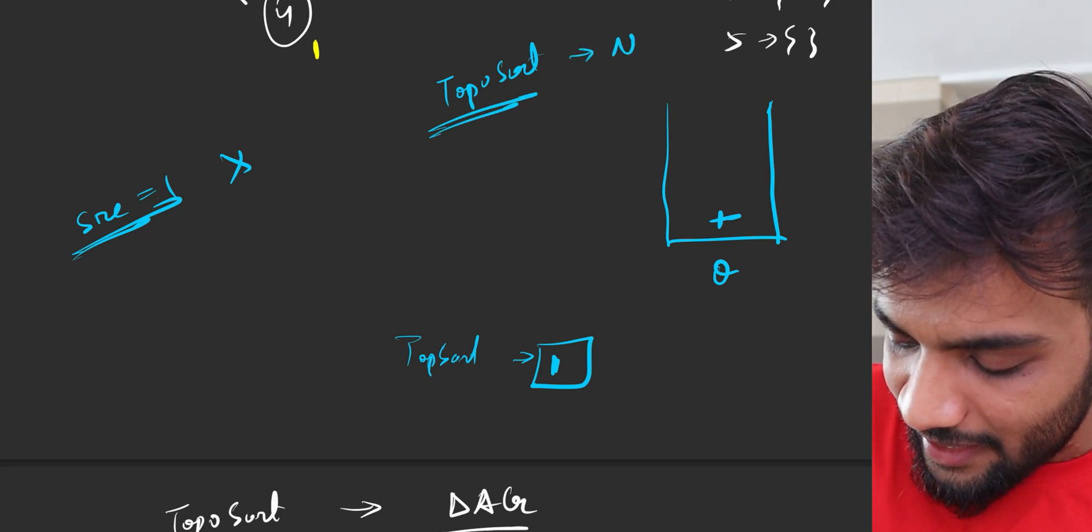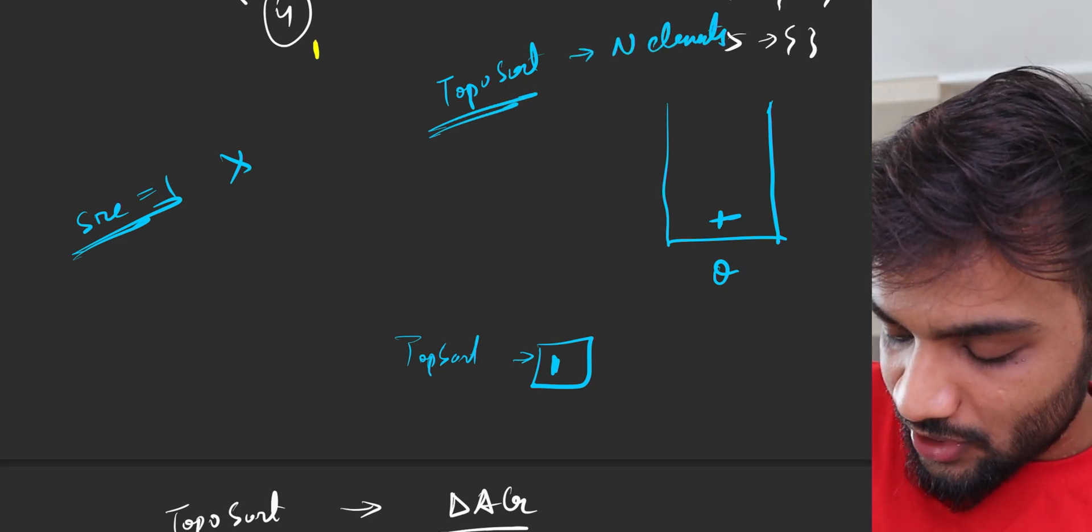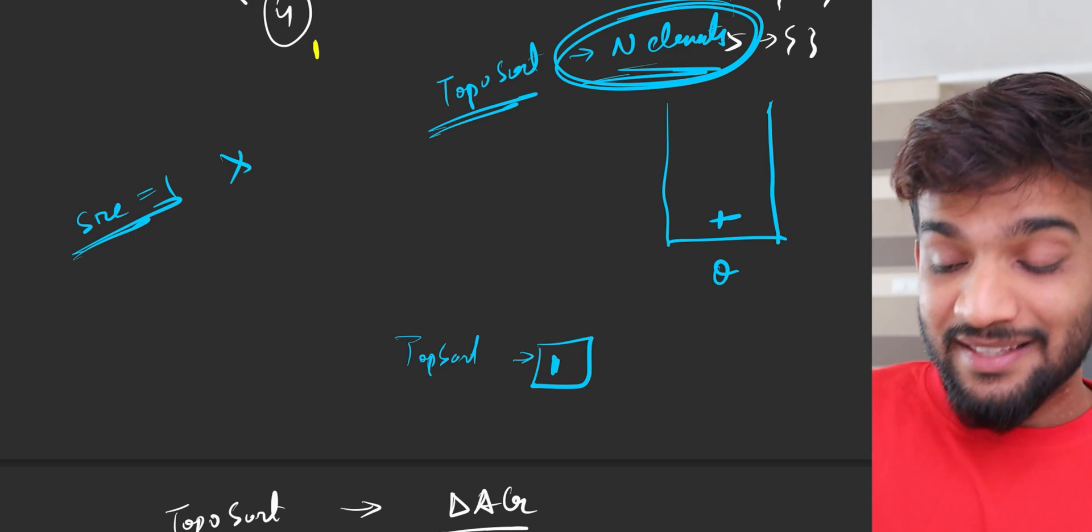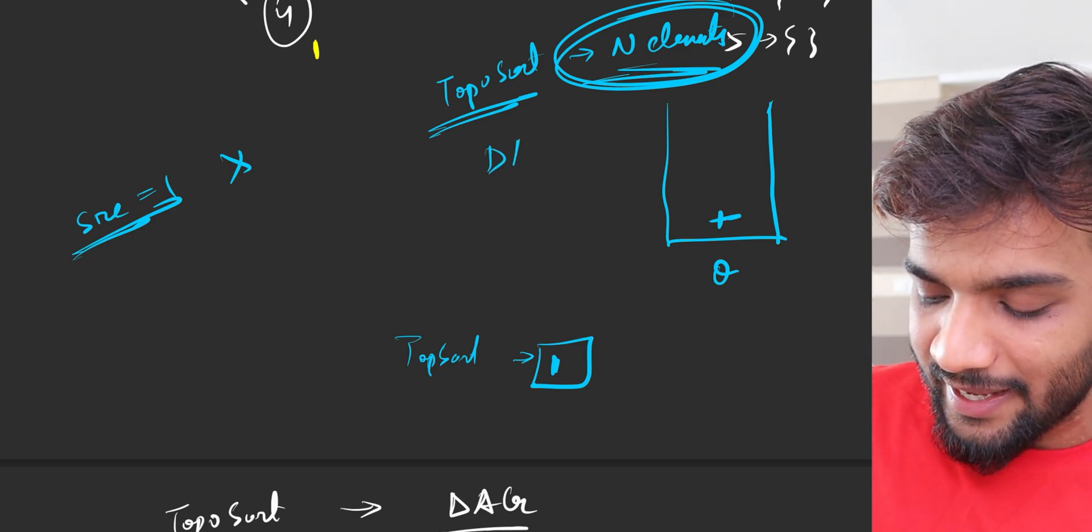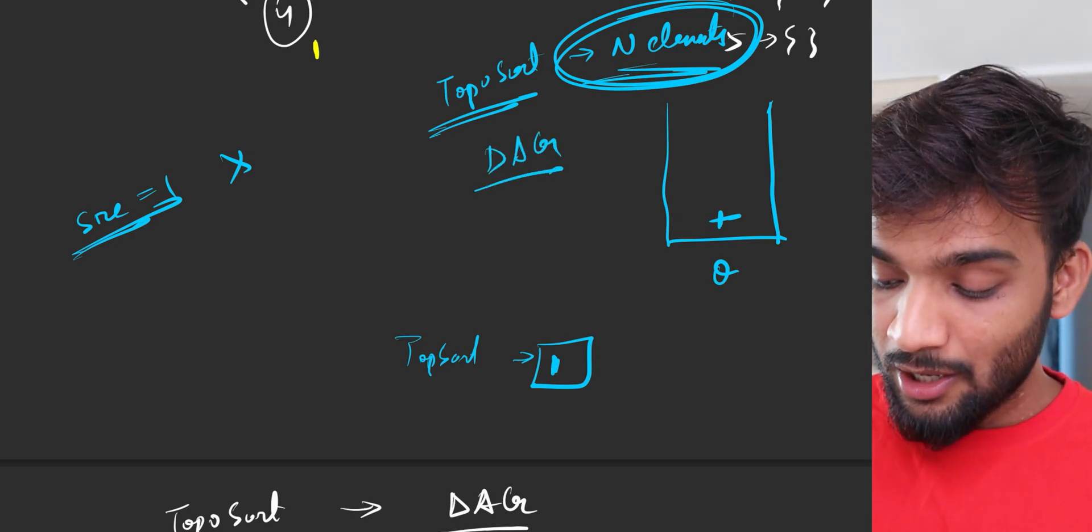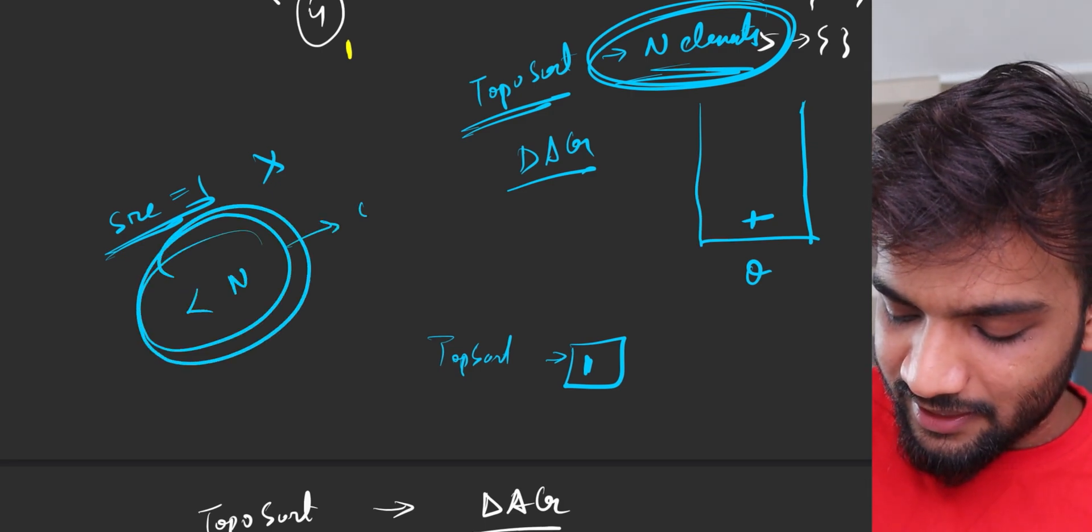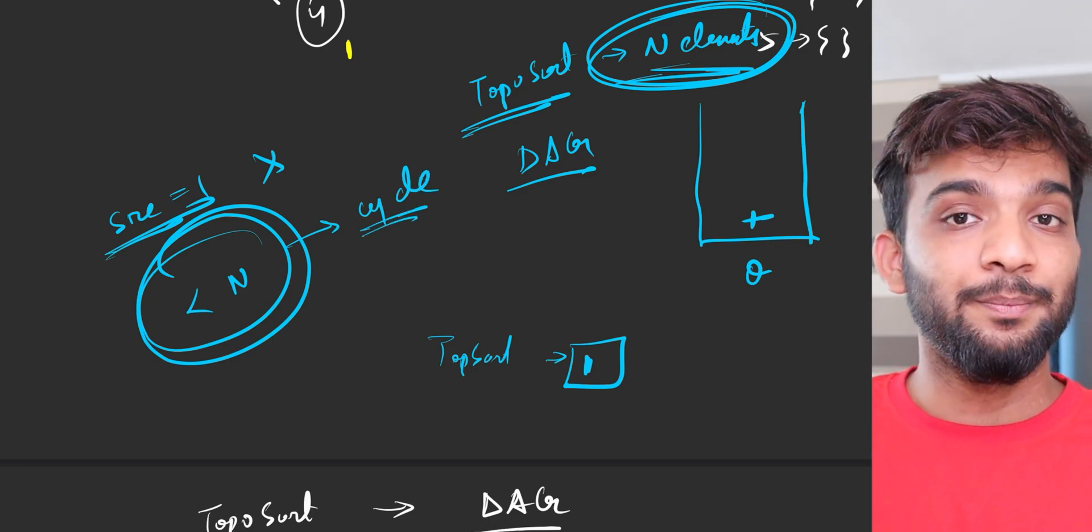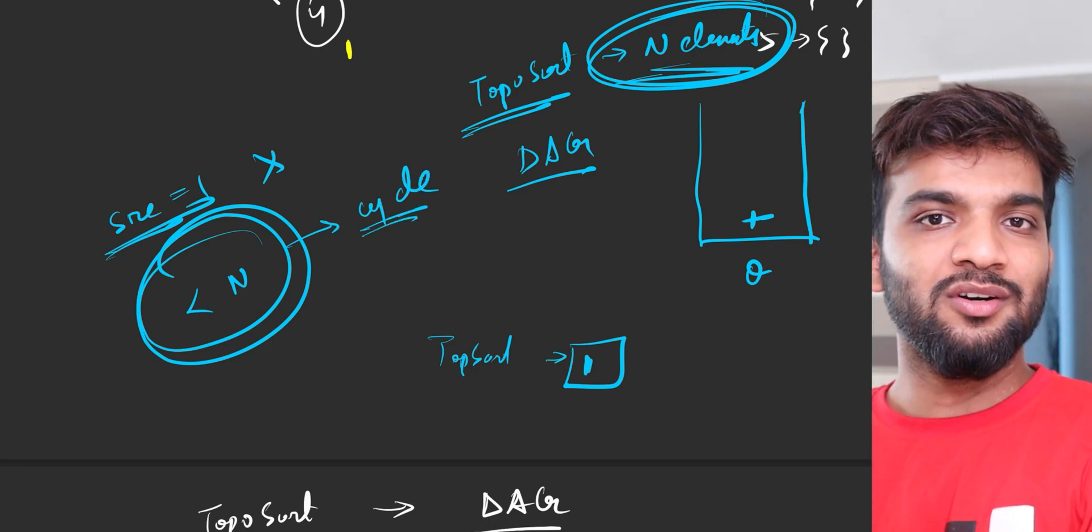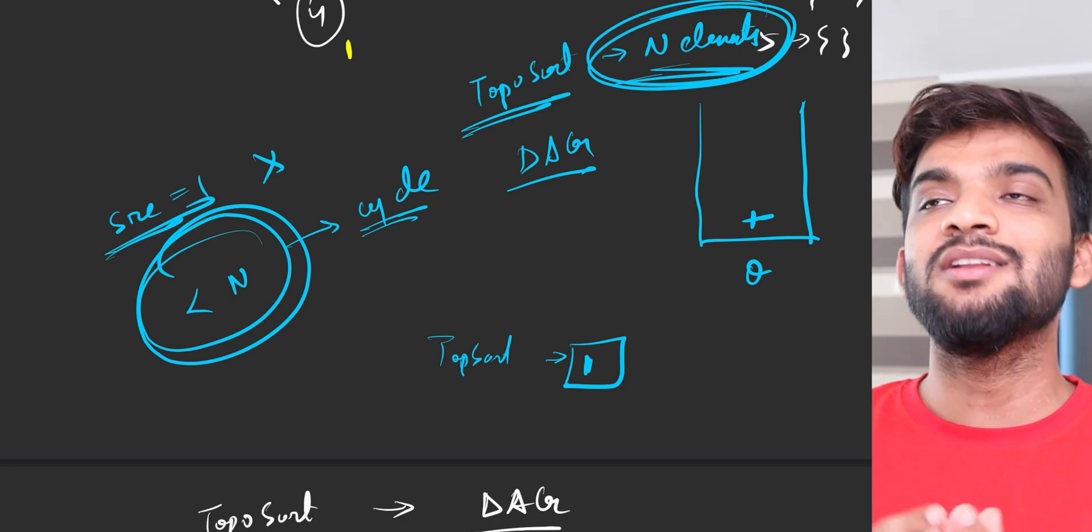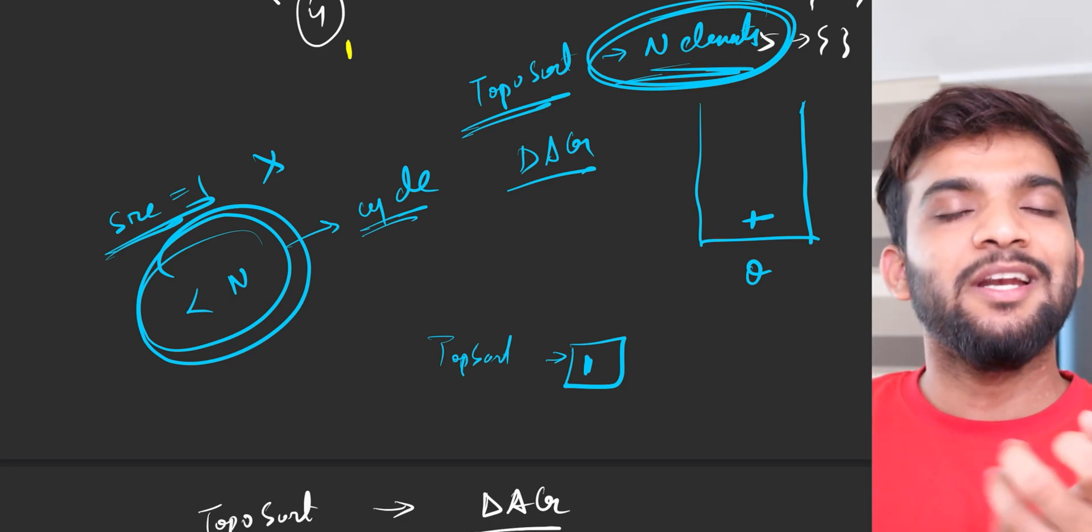But if the topo sort has anything lesser than n elements, then you can say that it contains a cycle. Very simple. If you're able to generate a topo sort, it means it does not have a cycle. If you're not able to generate a topo sort, it means it does have a cycle which is causing an issue.